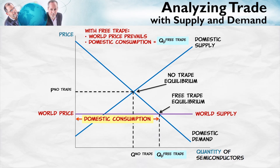Now, what about production? The domestic producers can only charge as much as the world producers — they can't charge a higher price. So when the world price falls and domestic consumers are able to buy at the world price, domestic producers can only sell at the world price, and they're going to be less willing to sell.